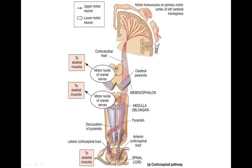Eighty percent of the fibers cross to the opposite side and descend to terminate in the spinal cord, ending on the anterior horn on the lateral side. This 80% that crosses forms the lateral corticospinal tract, terminating on the lateral side of the anterior horn. They synapse with the motor neurons present in the anterior horn — either directly on motor neurons or via interneurons, which connect the upper motor neuron to the lower motor neuron.